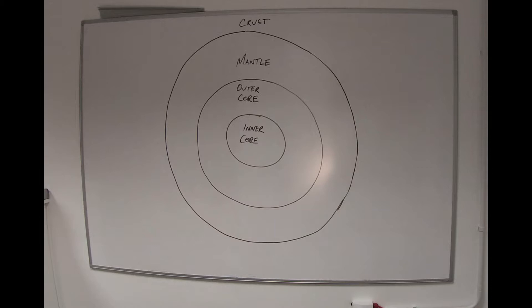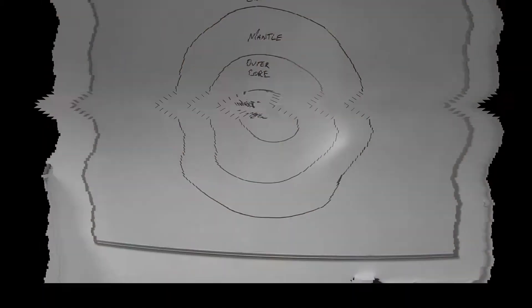The outer core is liquid and responsible for our magnetic field, about 2,200 kilometers thick. Then the inner core, which is solid and about 1,270 kilometers thick. But hold on - the deepest borehole we've ever drilled is about 12.2 kilometers deep, drilled in the Kola Peninsula in Russia near the Finnish border. It took 29 years.